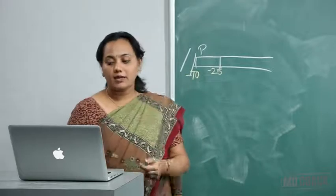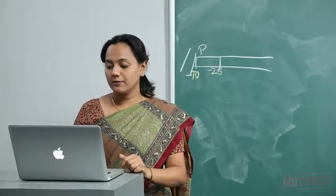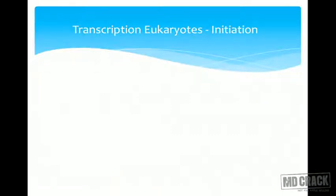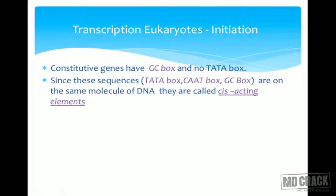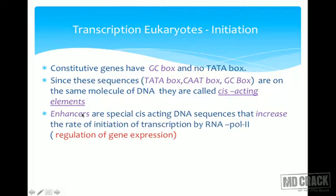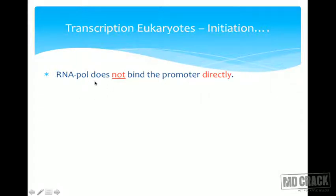Just as two consensus sequences are required in prokaryotes, eukaryotes also need two: one at minus 25 (the TATA box) and another at minus 70 to 80, known as the CAAT box. Constitutive genes, which are not regulated the same way, have a GC box and no TATA box. These sequences — the TATA box, CAAT box, and GC box — are on the same DNA molecule, so they are called cis-acting elements. Enhancers are special cis-acting DNA sequences that increase the rate of transcription initiation by RNA polymerase 2.